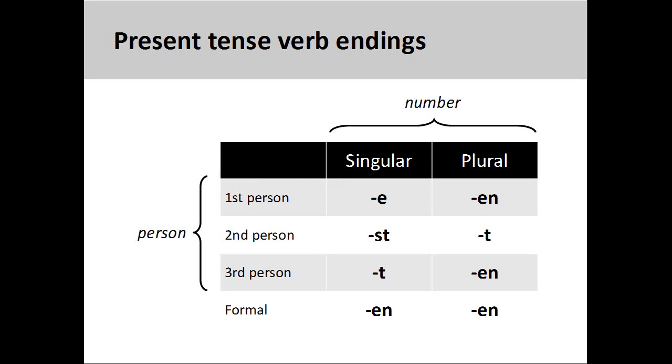The term present tense simply means that the action of the verb occurs in the present moment and not in the past. You will use this conjugation pattern most frequently in German. As you see on the screen, German has a verb ending for each combination of number and person. It is very important to memorize these endings.